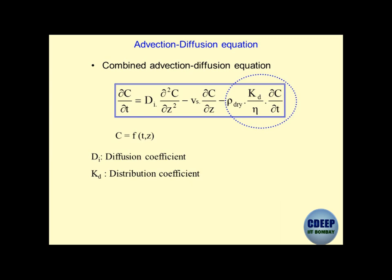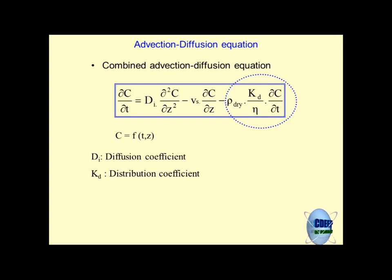The retardation coefficient R is a property of the contaminant-porous media system. Once you know Kd and the porous media attributes, you get the value of R and can see how much retardation in contaminant transport is going to occur. The principal unknowns in this equation are the coefficients - all coefficients are unknown. Laboratory tests provide them: hydraulic conductivity from falling head or constant head test, Di from diffusion experiments, Vs from discharge if you know porosity, and porosity from MIP.